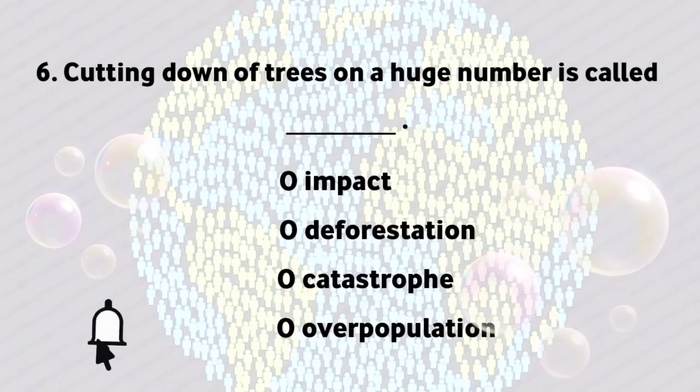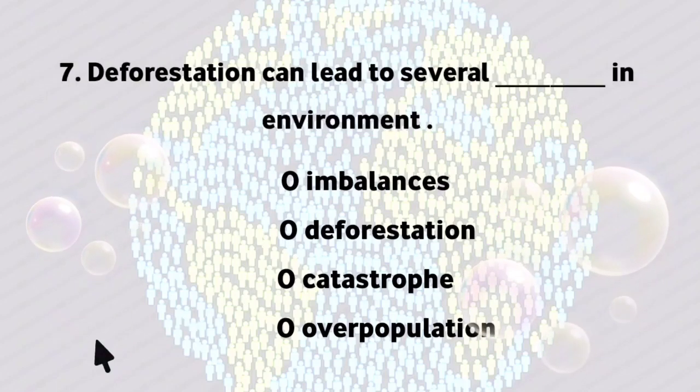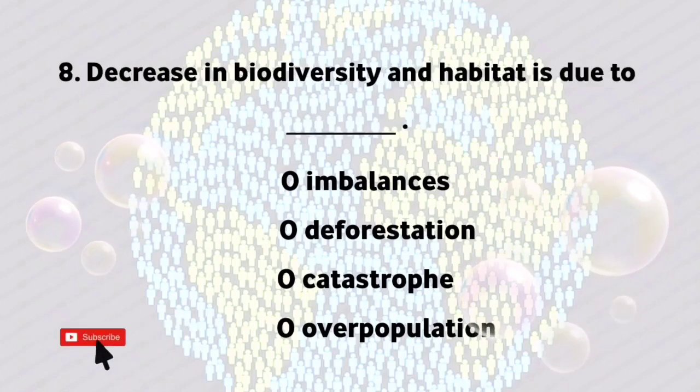Cutting down of trees on a huge number is called deforestation. Deforestation can lead to several imbalances in environment. Decrease in biodiversity and habitat is due to deforestation.